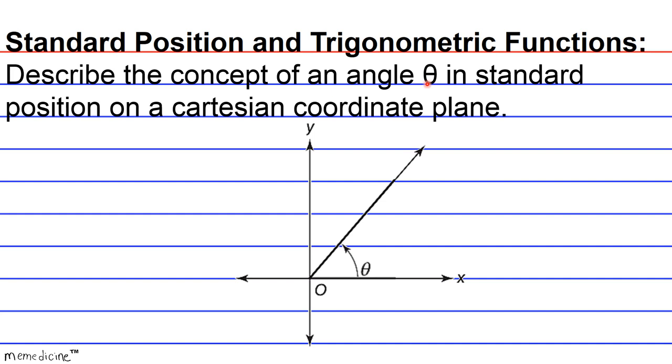The first point that I want you to understand is that for an angle theta in standard position, the vertex, that is the originating point, is located at the origin or zero on a Cartesian coordinate plane.